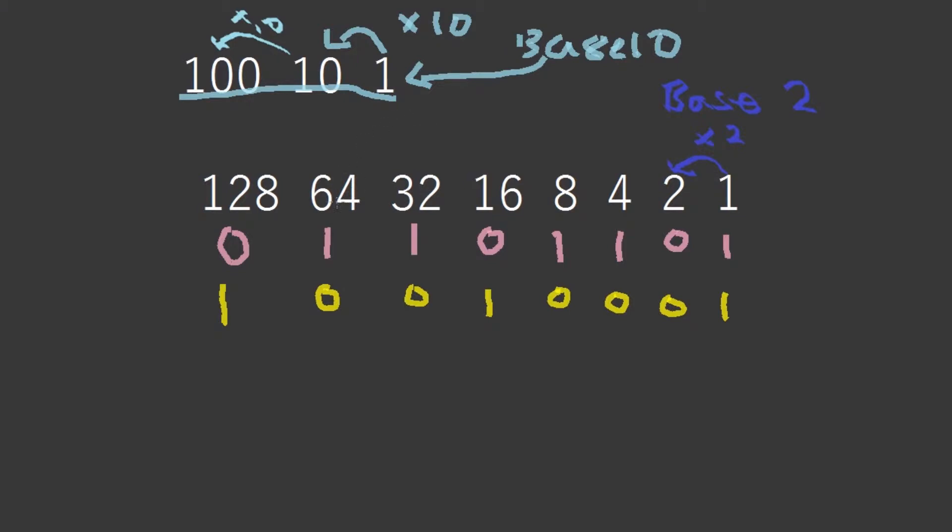So it multiplies by 2 each time. If you like to do math you can find the nth term of these things, but we're not going to do that today. What we're going to do today is adding binary numbers.